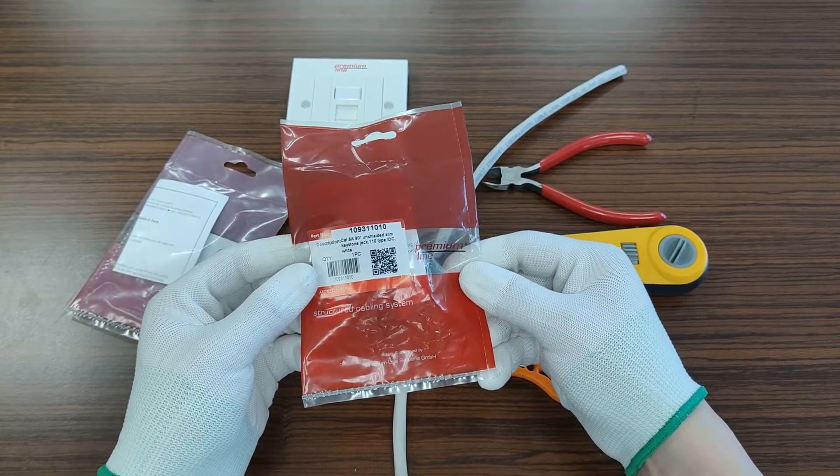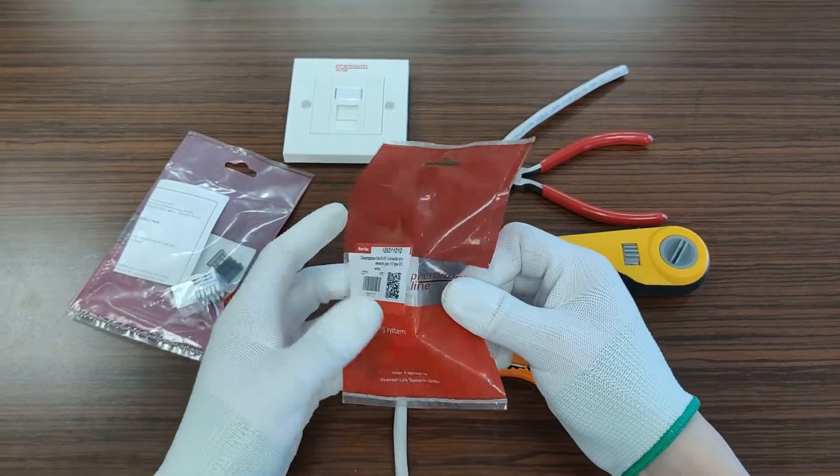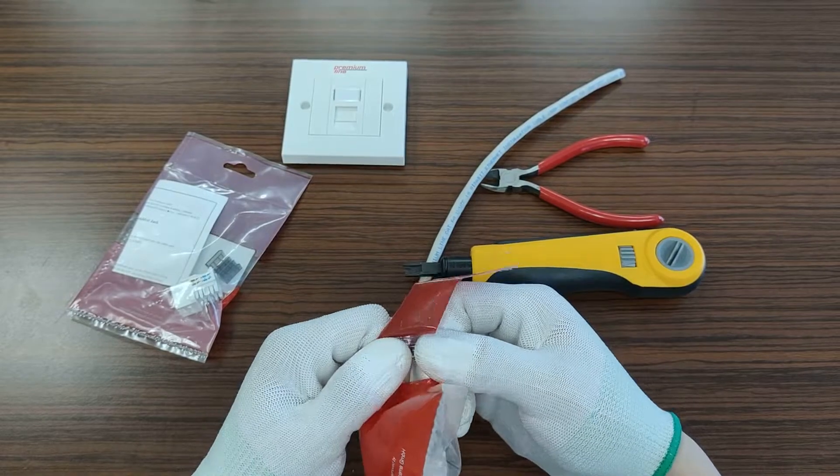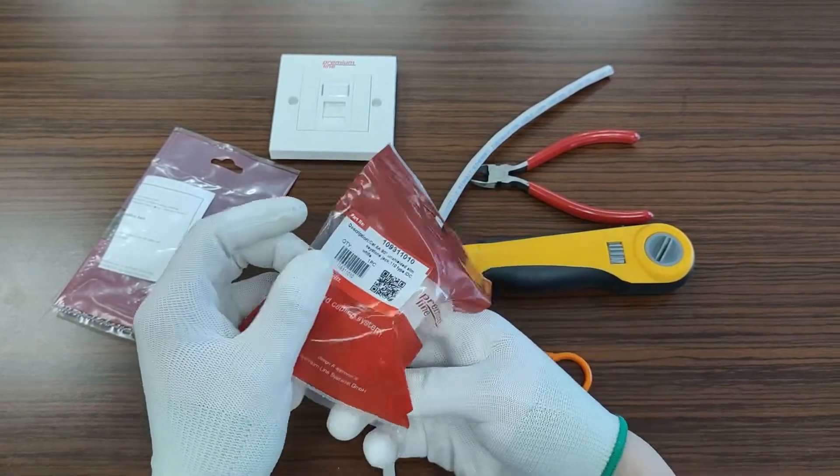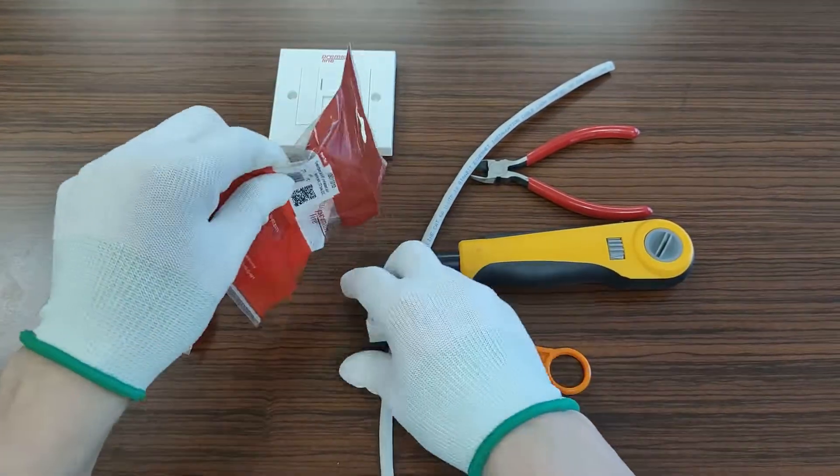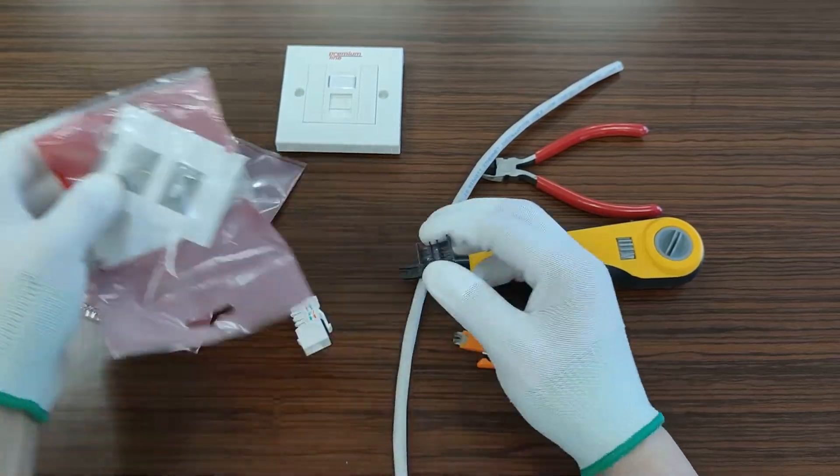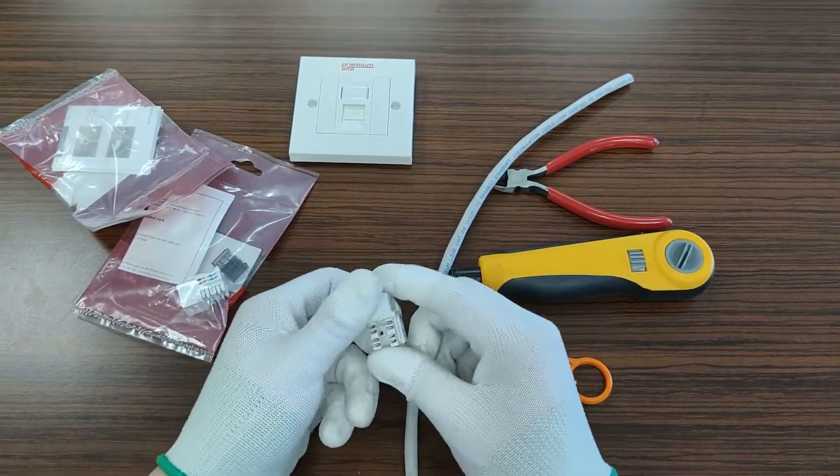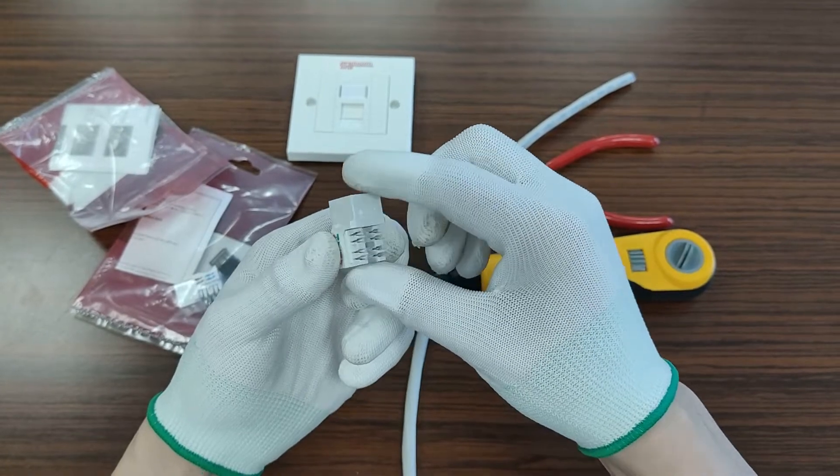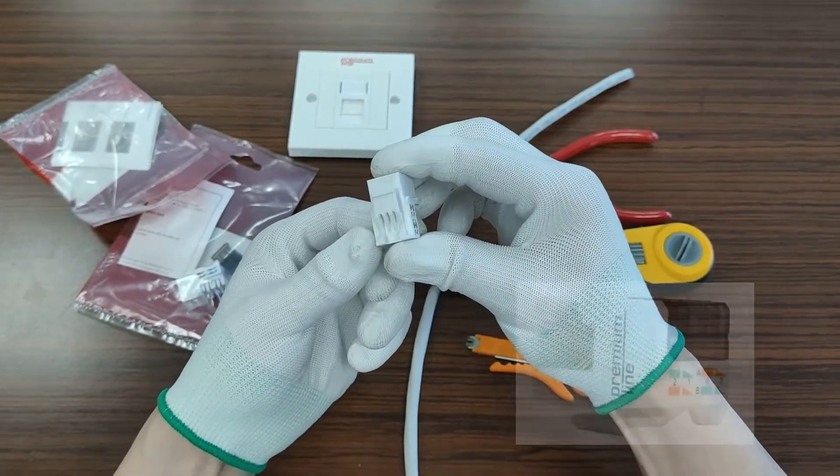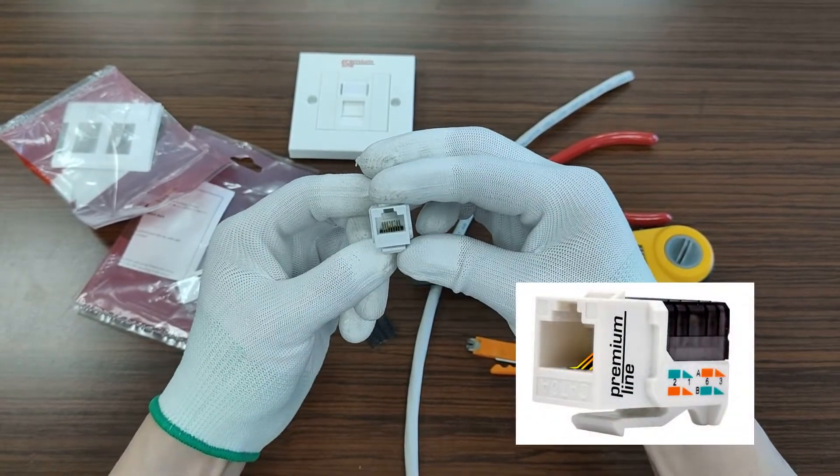This is how our branded package looks like. We take the product out of the package. It includes keystone installation instruction and the cover. On the keystone jack, cabling configuration symbols are provided.